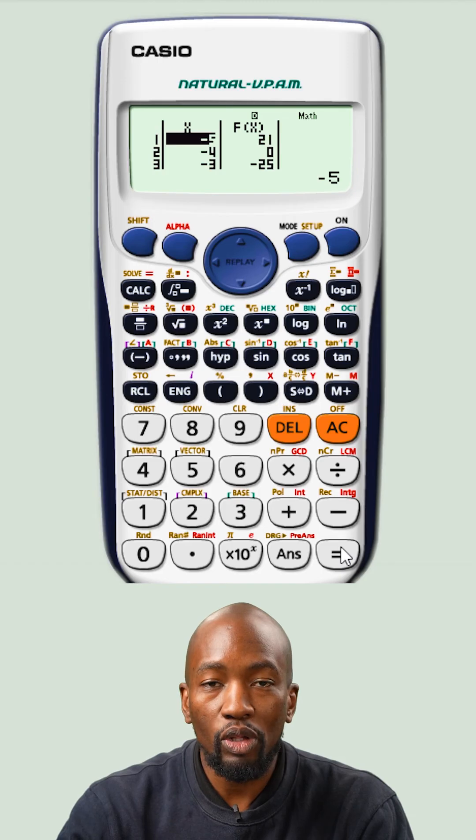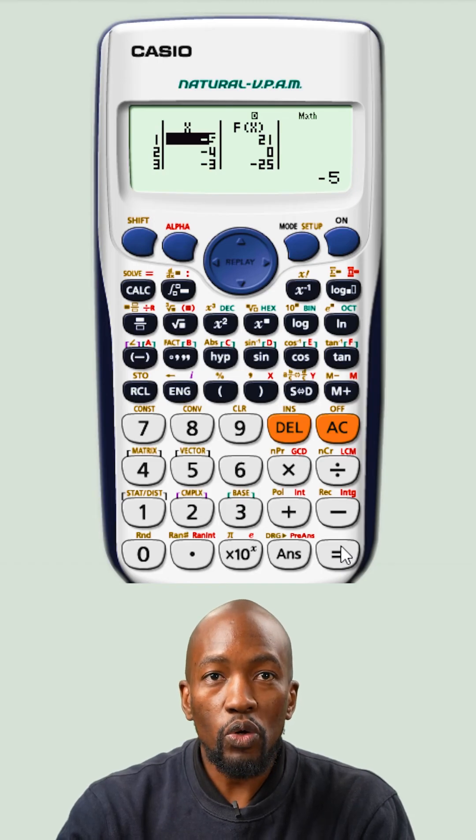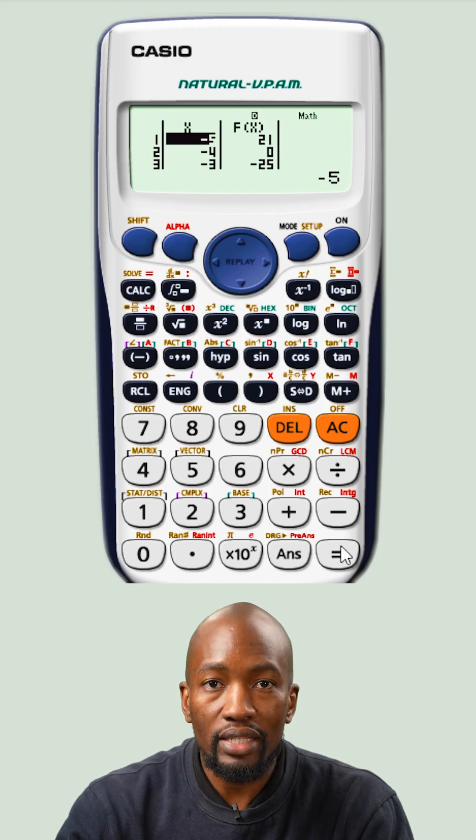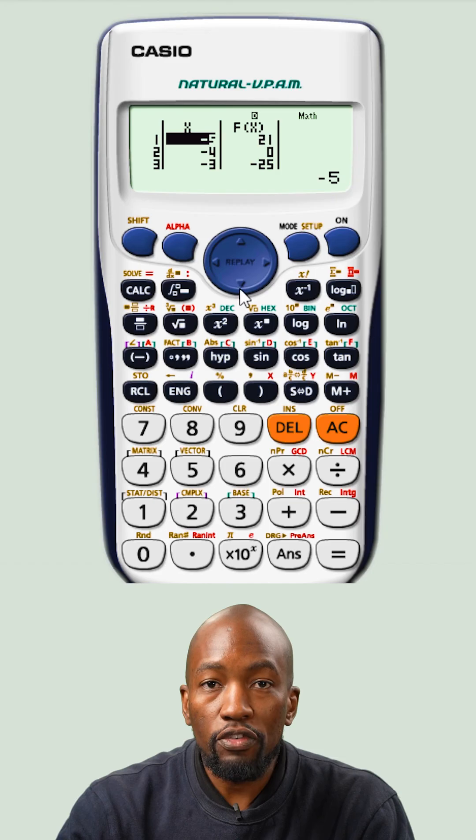Now you're going to have this very nice looking table on your calculator screen. So what you're looking for are the x values that give you f(x) as 0. We need to scroll down, and the first thing that we're seeing is when x is minus 4.